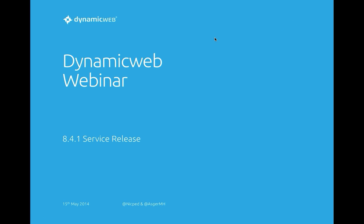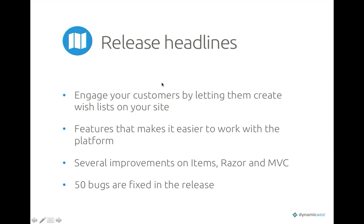Welcome to this Dynamic Web webinar about the 8.41 release. My name is Asger and I also have Nikolai who will join us later. This webinar is about the service release 8.41. As it is a service release, it doesn't contain that many new functionalities, but a lot of small features to make it even easier to implement Dynamic Web, improvements on items, Razor, and the FC implementation, and also a lot of bug fixes.